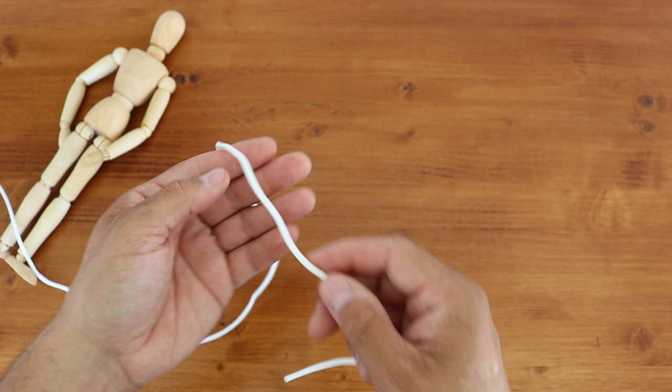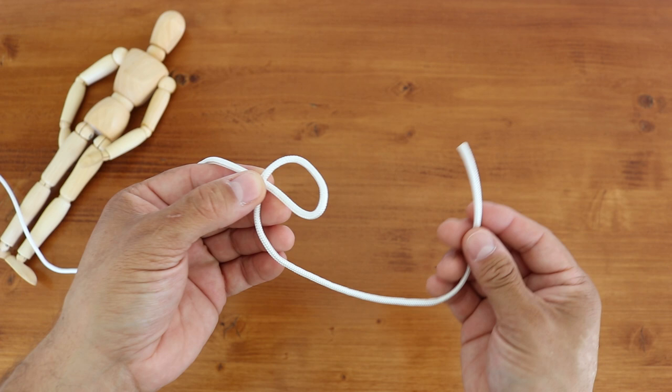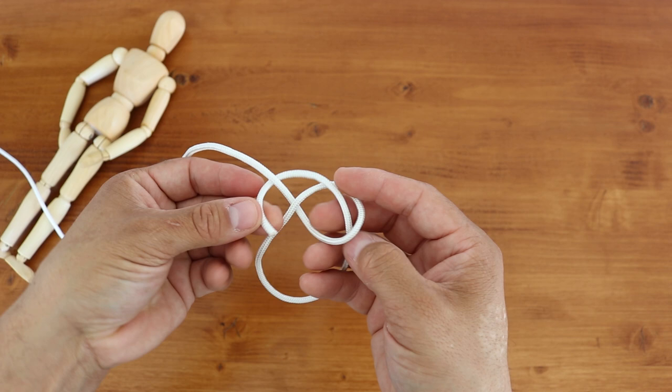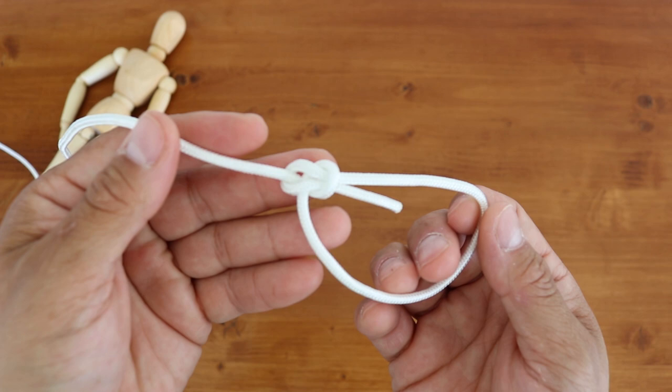Now, a typical bowline is tied by turning in an overhand loop, and then taking the free end, passing it from the back, you go around your standing end, and then right back through the hole you came from. Pull everything tight, and there is your standard bowline.